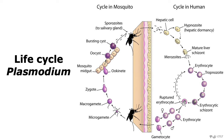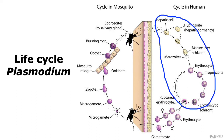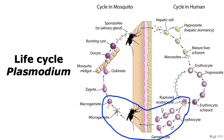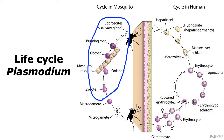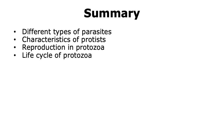Thus, in the case of Plasmodium, we were able to see merogony happening in the human, followed by gametogony, and then sporogony. Since the formation of the zygote, which is a hallmark of sexual reproduction, occurs in the mosquito, the mosquito is the definitive host, while the human is the intermediate host. With this, we come to the end of our talk, where we learned about different types of eukaryotic parasites, followed by the reproduction and life cycle of protozoans.